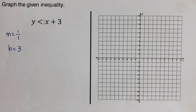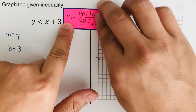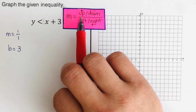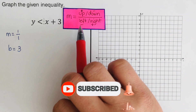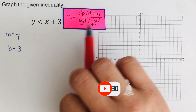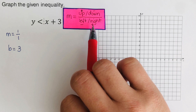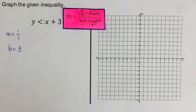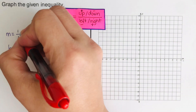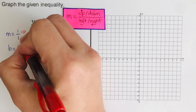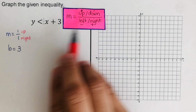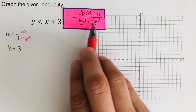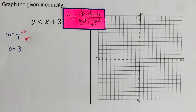Remember that m represents the slope. The top number tells us to go up or down — up if positive, down if negative. The bottom number tells us left or right — left if negative, right if positive. In this case, m is 1 over 1, so both are positive, meaning we go up 1 and right 1.